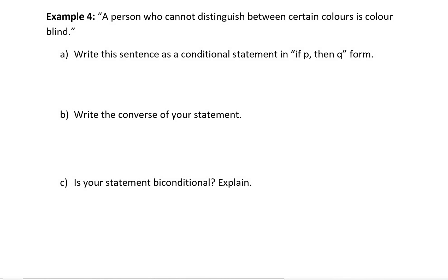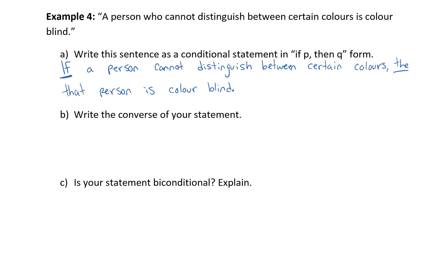Example four: a person who cannot distinguish between certain colors is colorblind. Write the sentence as a conditional statement in if P then Q form. By adding 'if a person cannot distinguish between certain colors, then that person is colorblind,' that is now a conditional statement. To write the converse, we need to flip the P and Q.